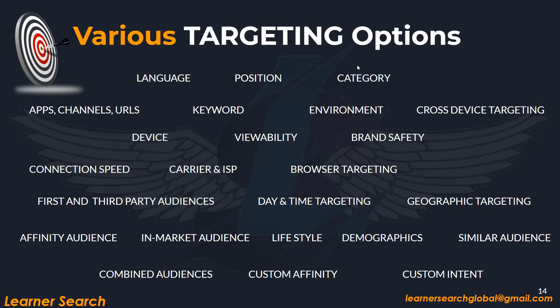There are other main targeting categories available in DV360. We shall look into various targeting options in the platform like Language, Position, Keyword, Device, Viewability, Brand Safety, Browser Targeting, and many more. Not only DV360, but in any DSP, most of these options are available.